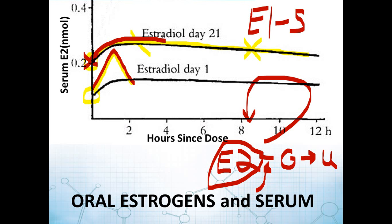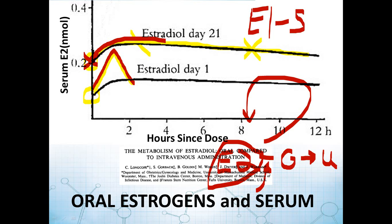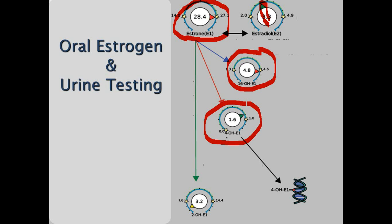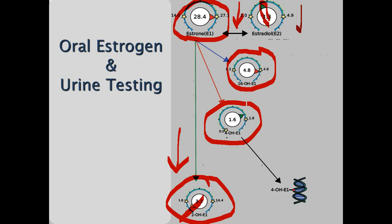In urine testing, the added benefit is you get the metabolites. Here's a patient taking estrogen: you can see elevated levels of estrone, because the built-up estrone sulfate is reflected in urine, while estradiol is right in the middle of normal. We can also look at downstream metabolites: 16-hydroxyestrogens, 4-hydroxyestrogens, and 2-hydroxyestrogens. In this case, there's not a lot of 2-hydroxylation, which is generally not considered favorable. Taking something like diindolylmethane (DIM) or indole-3-carbinol will push estrogens more toward the 2-hydroxy pathway, giving more favorable metabolism, while also likely pulling down E1 and E2 a little.